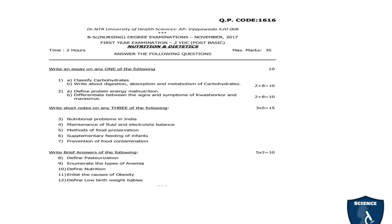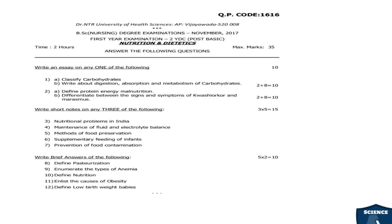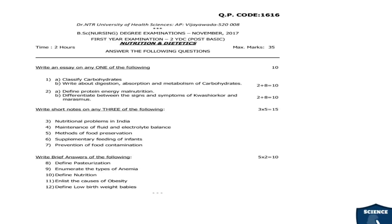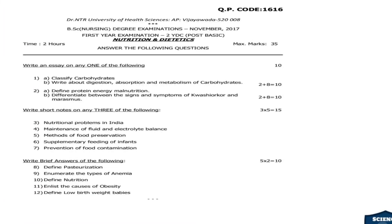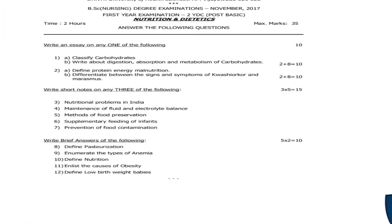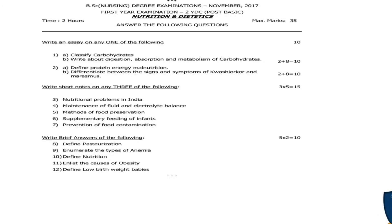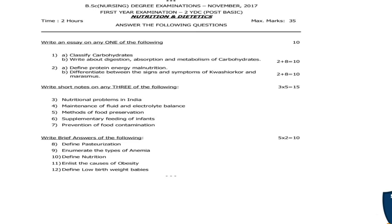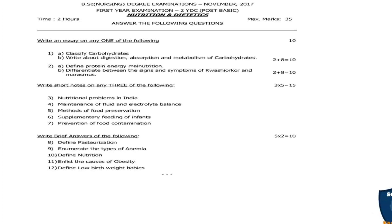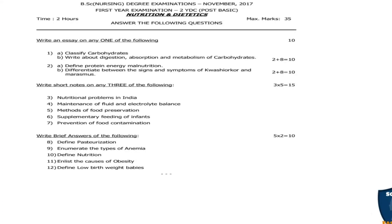The first question paper code is 1616: Dr. NTR University of Health Sciences BSc Nursing Degree Examination, November 2017, first year examination, 2IDC program. Maximum marks is 35 marks, time allotted is 2 hours. Write an essay on any one of the following — they will give 2 questions, out of which you have to answer any one. The marks are 10 marks for this question.